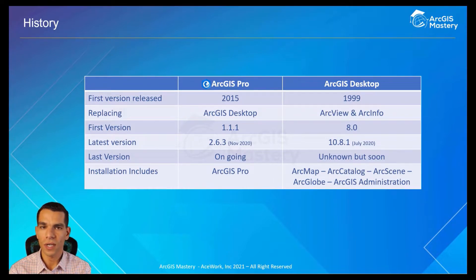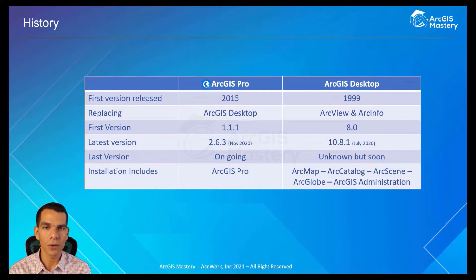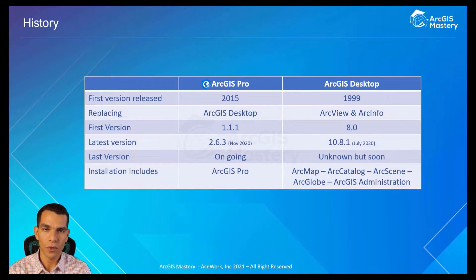ArcGIS Pro was released in 2015, and the first version was 1.1.1. The last version is 2.6.3, released in November 2020, and it will keep going because this is a new product and Esri will release new versions for ArcGIS Pro. When you install ArcGIS Pro, you only get ArcGIS Pro by itself because it includes everything you need inside one application.